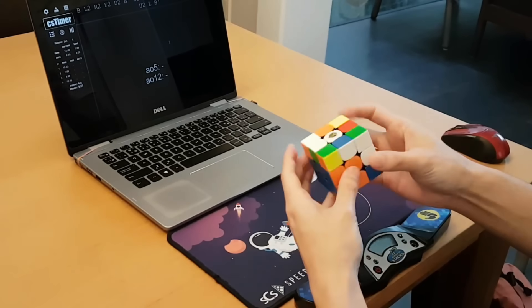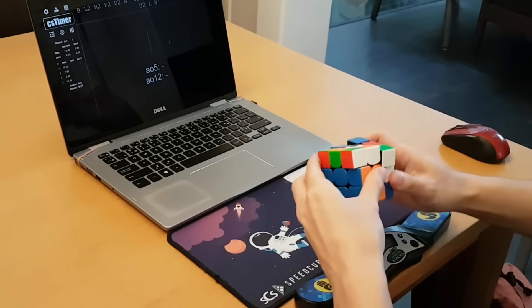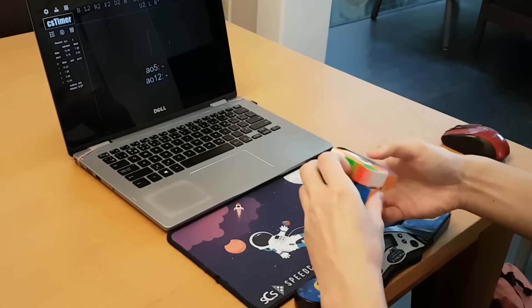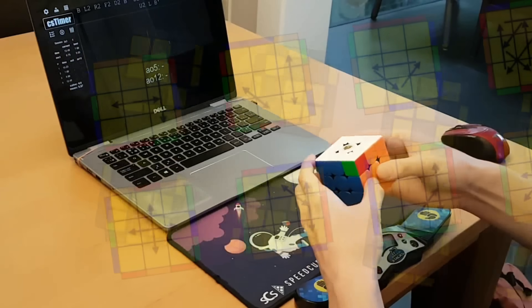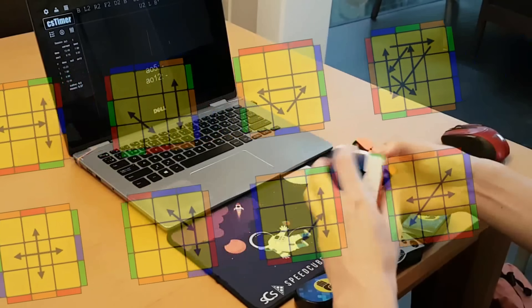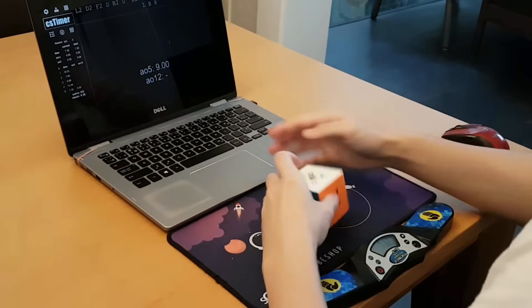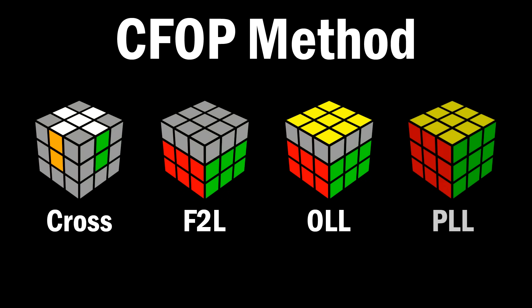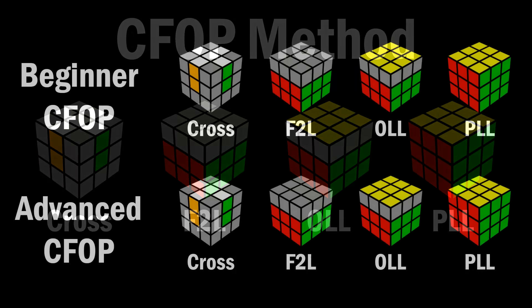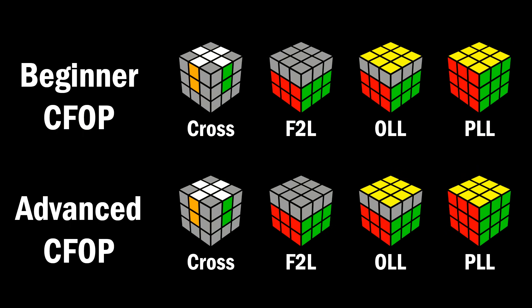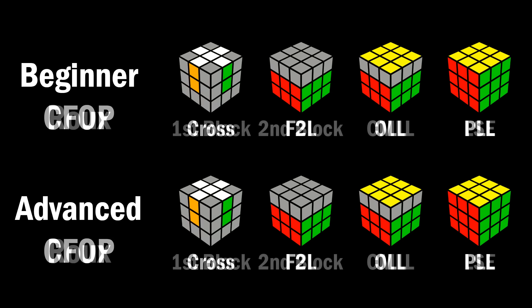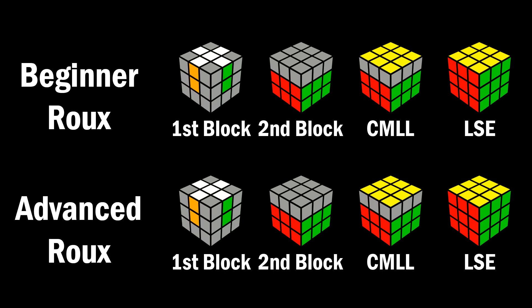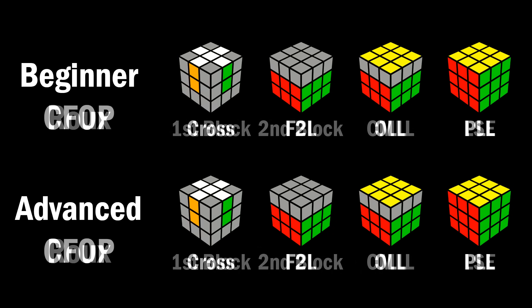Learning to become a speedcuber can be very overwhelming as there's so much knowledge and it's hard to know how to approach this. For the CFOP method, the four main steps are the cross, F2L, OLL, and PLL. And to make the transition easier, there are beginner versions of these steps. This doesn't just apply to CFOP — if you look at a method like Roux, it's very similar, but this video will be focused on CFOP.